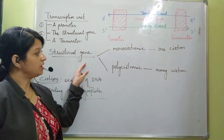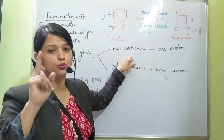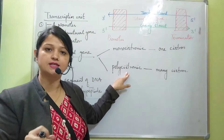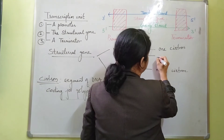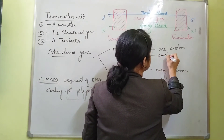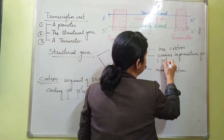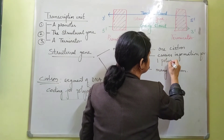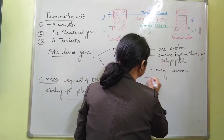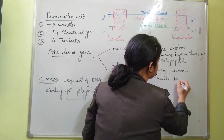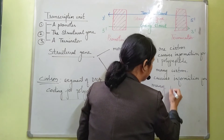The structural gene is of two types: monocistronic and polycistronic. Monocistronic means it contains only one cistron, so it carries information for one polypeptide. Polycistronic means it contains many cistrons, so they carry information for many polypeptides.